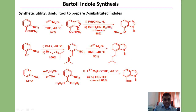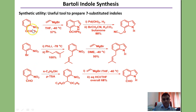Bartoli indole synthesis is successful only when the ortho-positions of the nitro group are blocked. Ortho-substituted nitrobenzenes are the substrates here, and as a result 7-substituted indoles can be prepared. Its reaction with vinylmagnesium bromide gives the 7-substituted indole. Here also we get a 7-substituted indole.